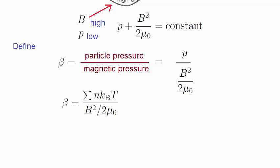In fusion plasma research, where tokamaks are used, β must be less than 1, for the reason that the magnetic field must confine the plasma — that means the magnetic field pressure on the particles must be greater than the particle pressure. So the denominator in β must be greater than the numerator, that is, β has to be less than 1.